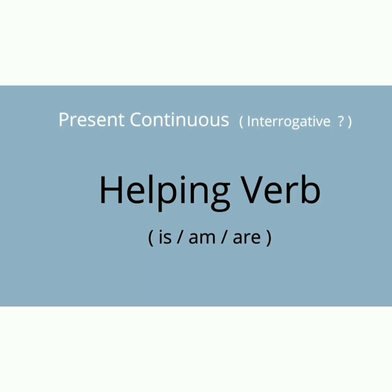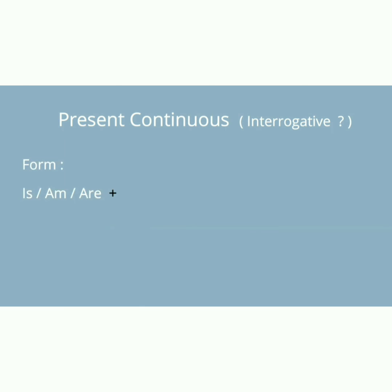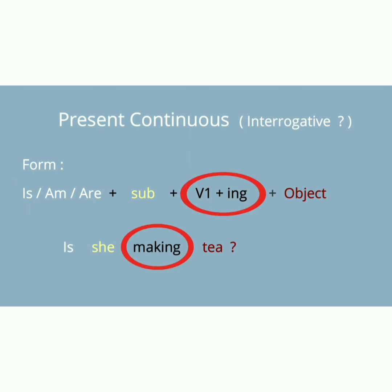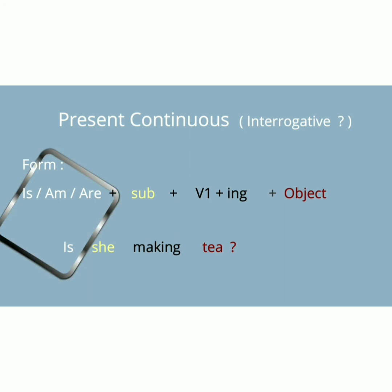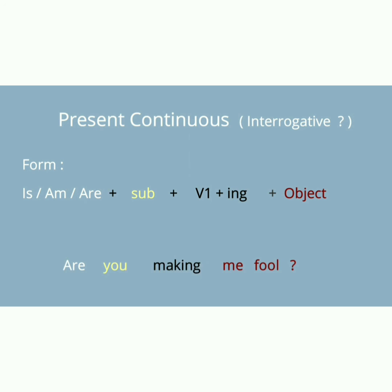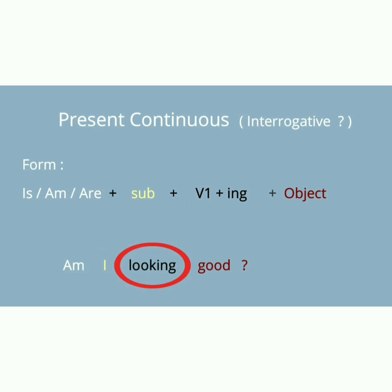Interrogative میں is/am/are subject کے آگے آ جاتے ہیں اور subject پیچھے چلا جاتا ہے: is/am/are + subject + verb first form + ing + object۔ جیسے: Is she making tea? Are you making me fool? Am I looking good? He, she, it, name کے ساتھ is — سب examples اسی کے according ہیں۔